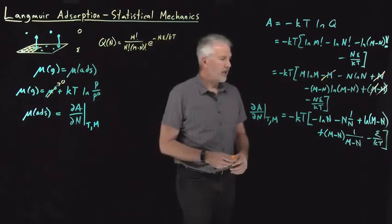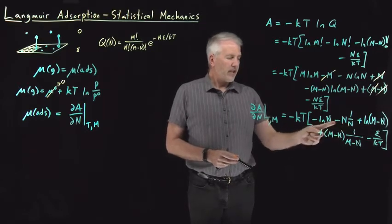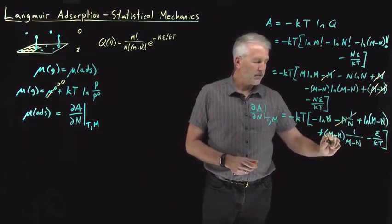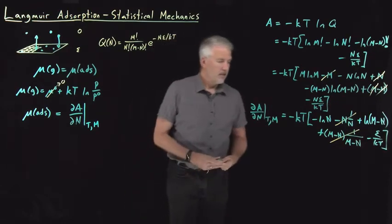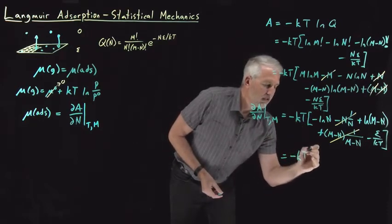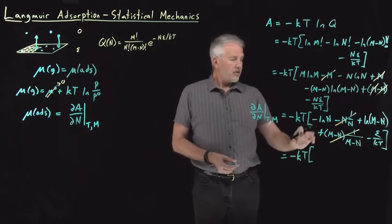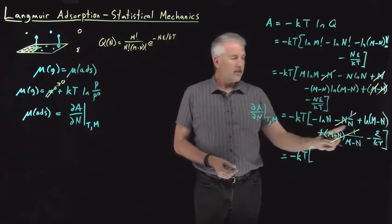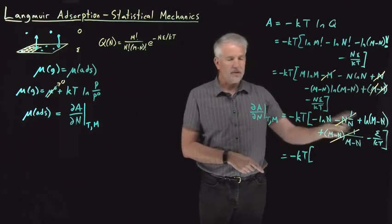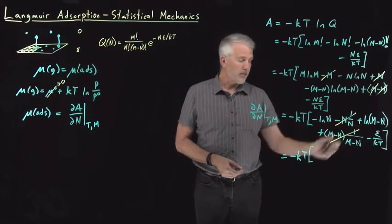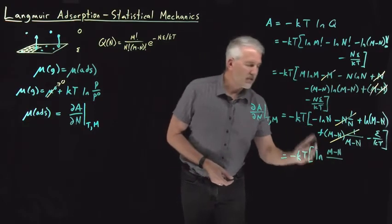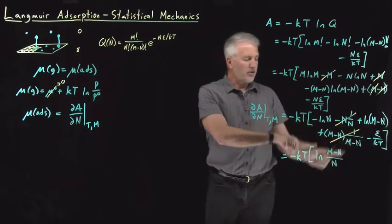After cancellation, I've got two log terms: negative log N and positive log(M−N). Combining those, the difference of two logs becomes the log of a quotient: log[(M−N)/N]. So dA/dN = −kT [log((M−N)/N) − ε/kT], with the −ε/kT term left separate.